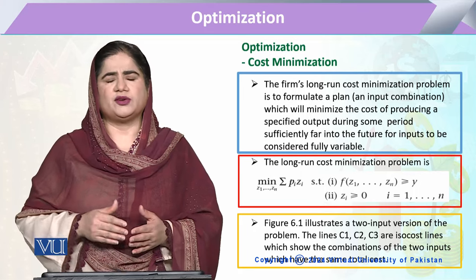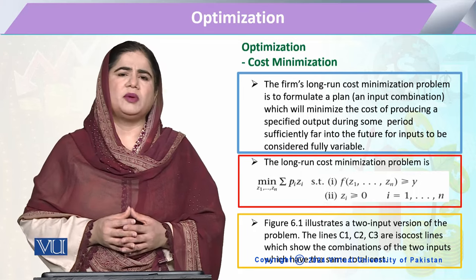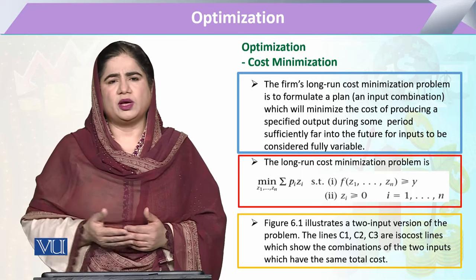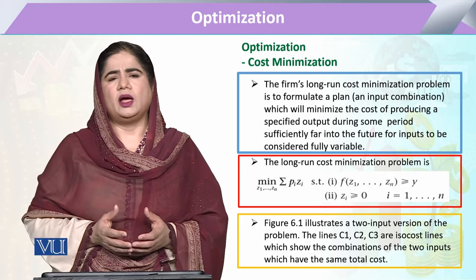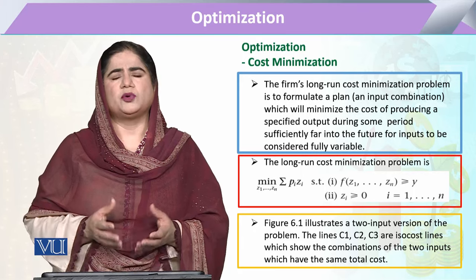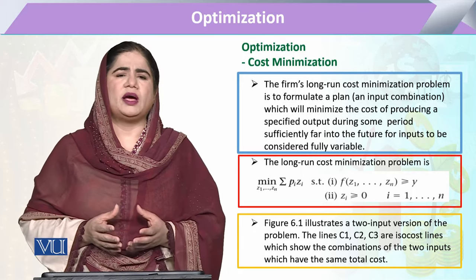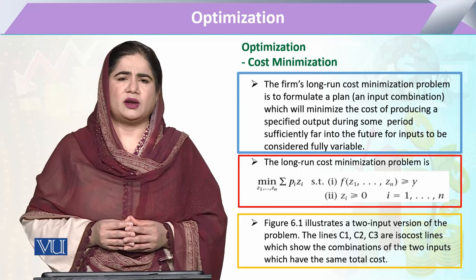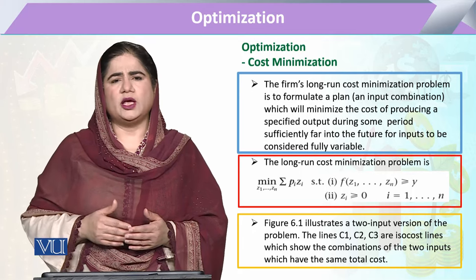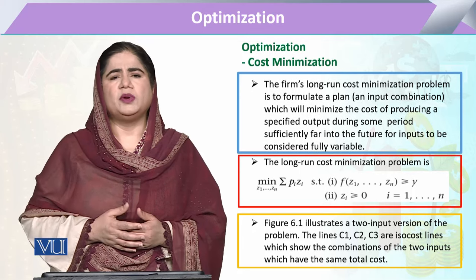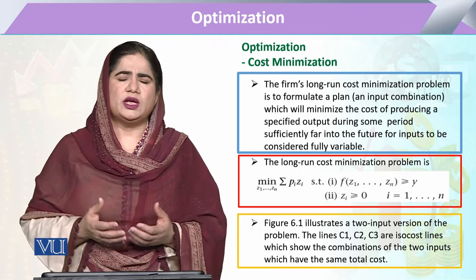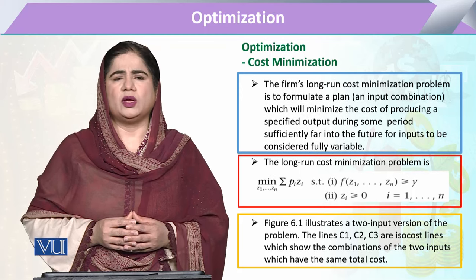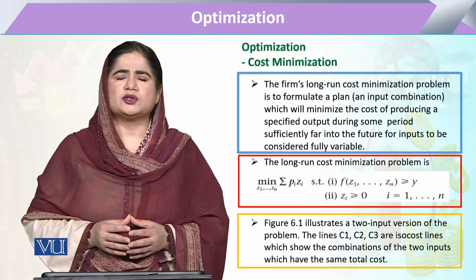In production we have talked about factor demand, and then we have talked about output. When any employer or any producer has to optimize — meaning the best resource allocation — the producer has its own resources, its own inputs, which have their own market prices, and it has its cost to minimize.